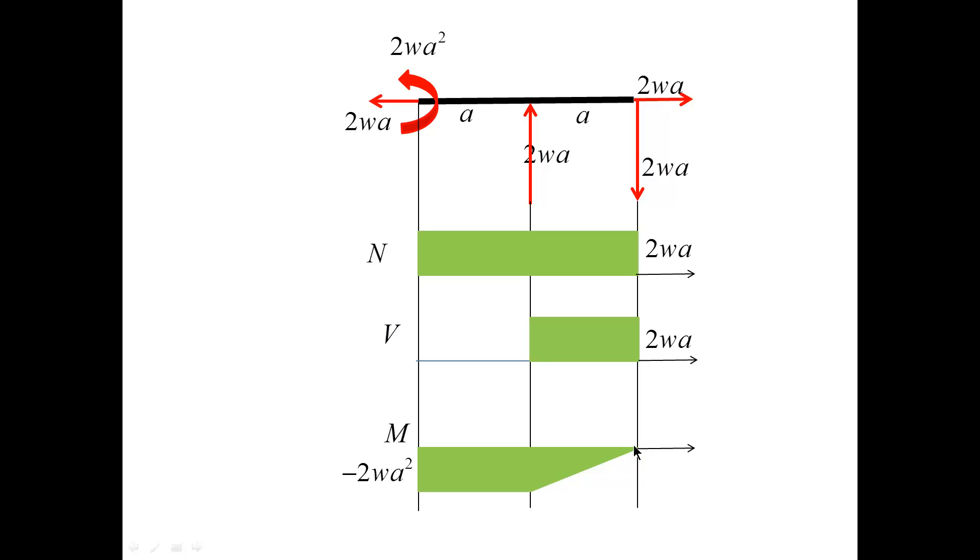The fact that we have 0 at this point is very important because we have a hinge here. Also, please pay attention that 2Wa here is consistent with this value of 2Wa, and of course tension 2Wa is consistent with this one.